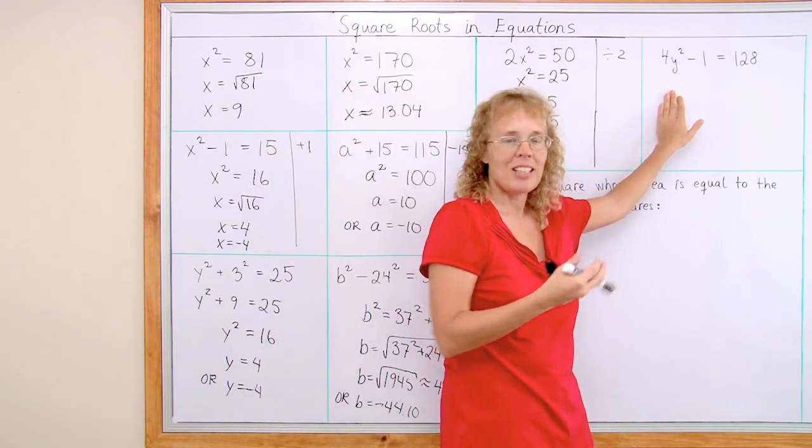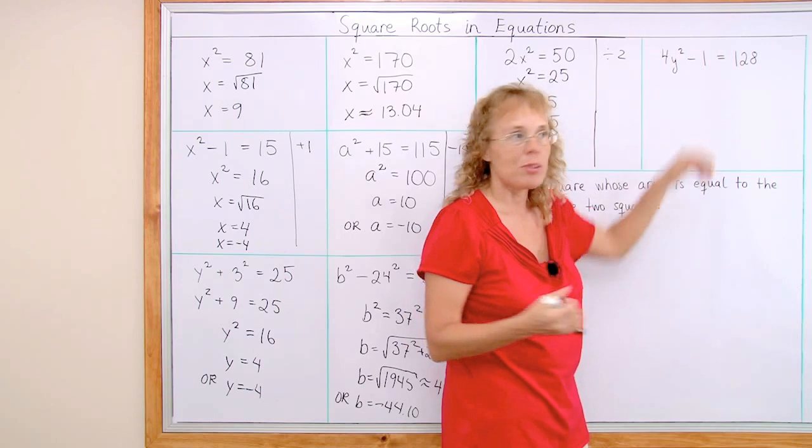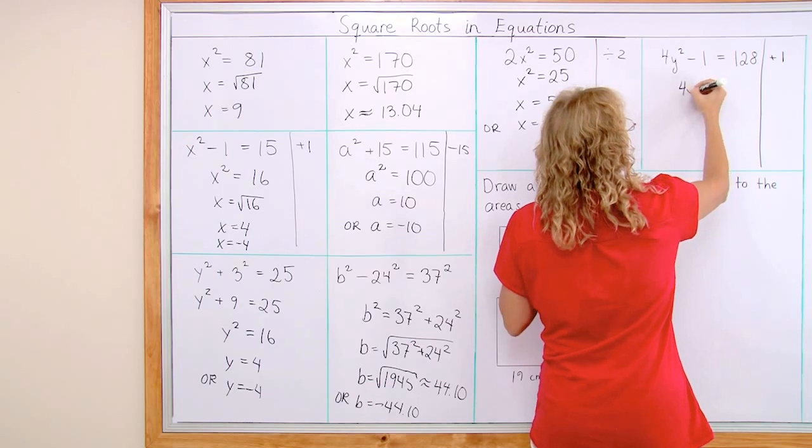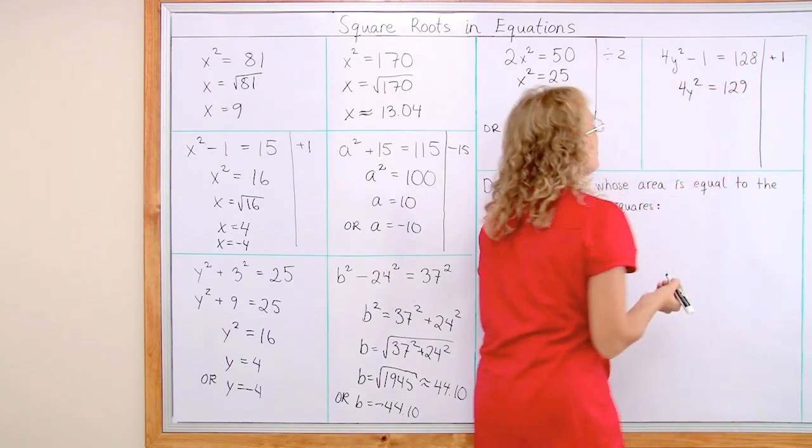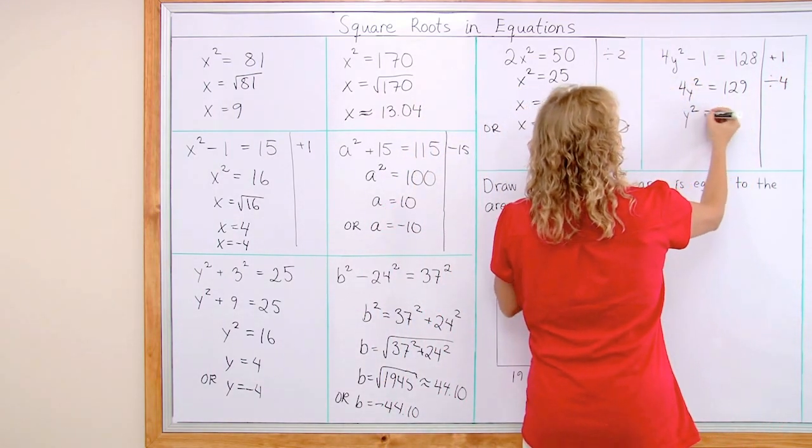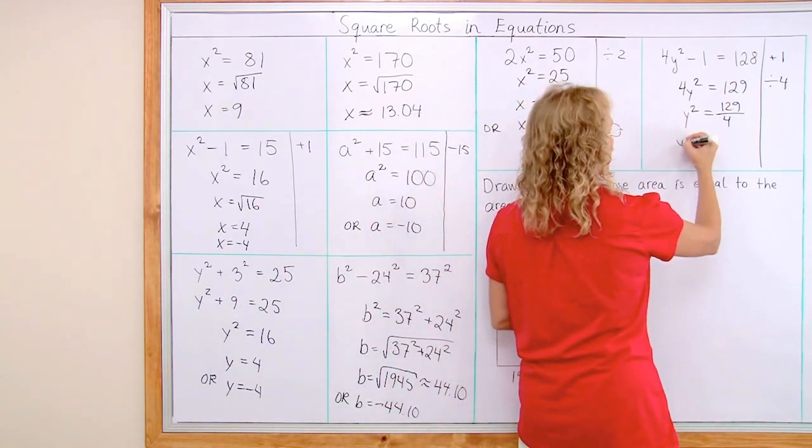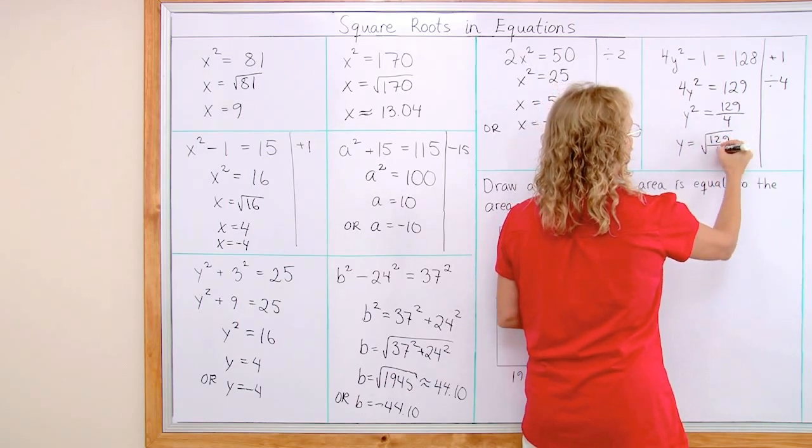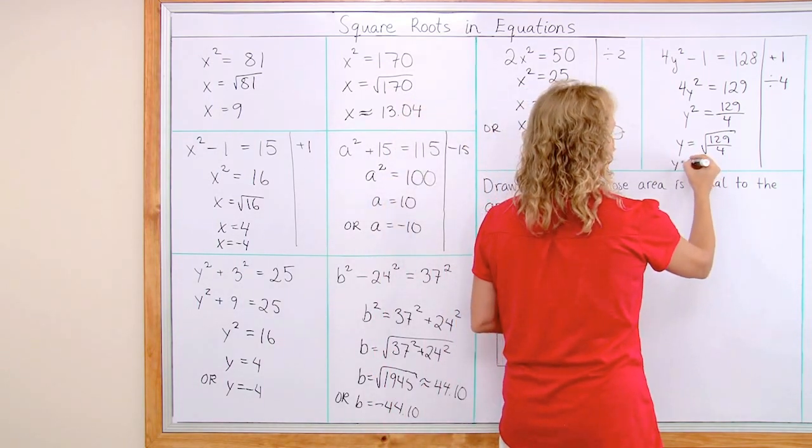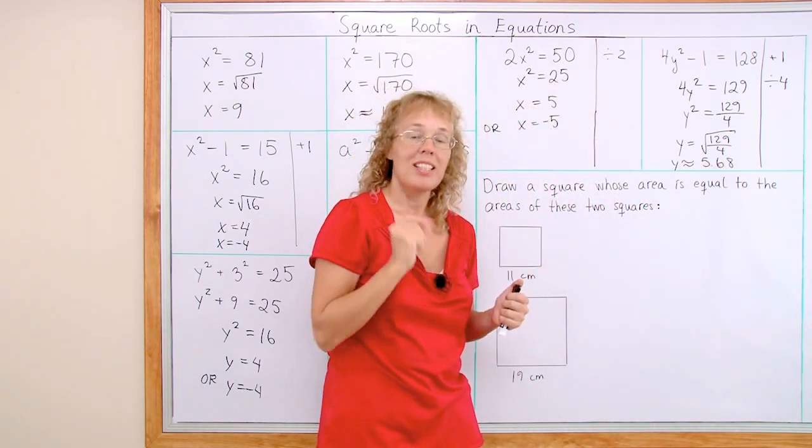Now here, there is again one extra step here. First I will get rid of this negative 1 here. I will add 1 to both sides. Use my marginal notes. Add 1 to both sides. 4y squared equals 129. Next divide by 4. So now I have y squared alone. And this is 129 divided by 4 on that side. Lastly, take square root. Y equals square root of that thingy, 129 divided by 4. And we will get y equals approximately 5.68. And also y could be negative 5.68.